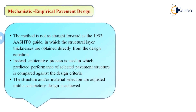Instead, an iterative process is used in which the predicted performance of a selected pavement structure is compared against the design criteria. We first calculate the stresses and strains by considering some axle load, pavement thickness, and pavement parameters like Poisson's ratio or modulus of elasticity. These stresses are compared with the empirical method, and the structure or material selection is adjusted until a satisfactory design is achieved. If the stresses exceed the empirical formula limits, we increase the pavement thickness. This concludes the introduction to ME pavement design.